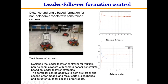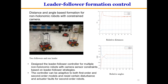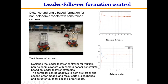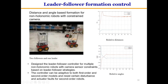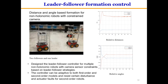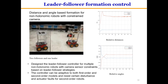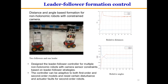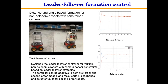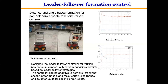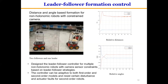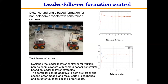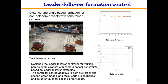The P380 robots with non-holonomic robot models are used in this experiment. A low-level controller is designed for multiple non-holonomic robots with camera sensor constraints. Based on leader-follower strategies, this experiment involves two followers and one leader.